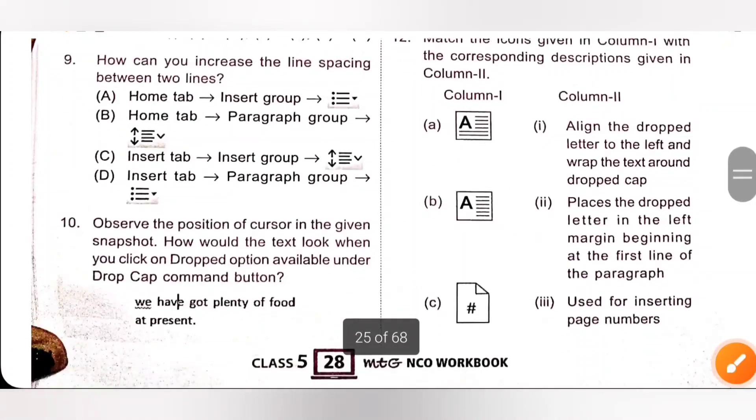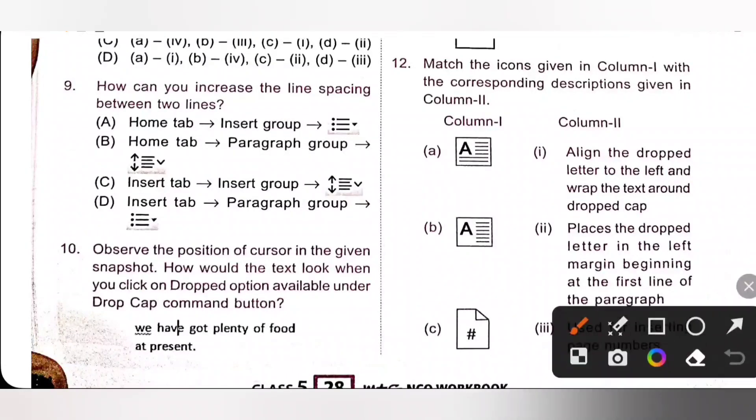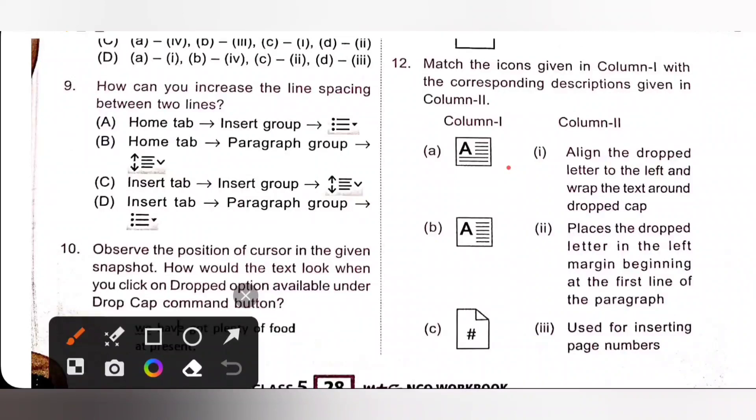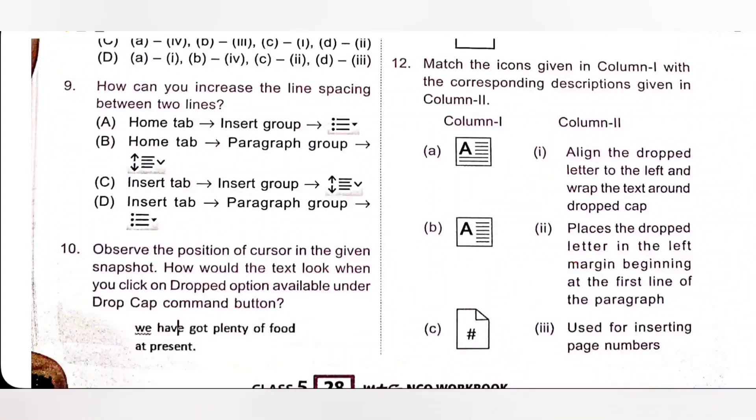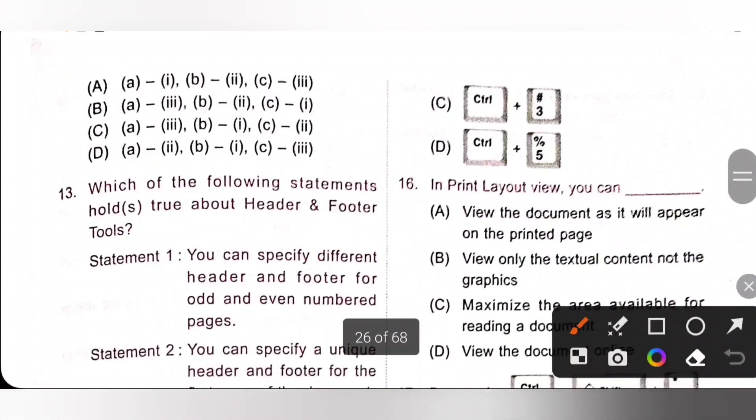Twelfth one, match the icons given in column one with the corresponding descriptions given in column two. So A means, yes, align the dropped letter to the left and wrap the text around the dropped cap. B places the dropped letter in the left margin beginning at the first line of the paragraph. So B2. C used for inserting page number. So A1, B2 and then C3. So option A1, B2 and then C3. So option A is the correct answer.